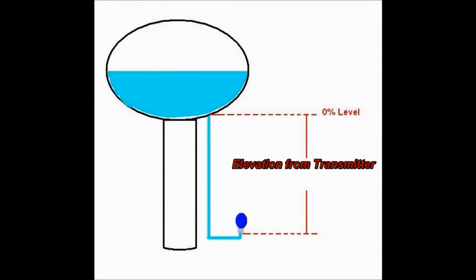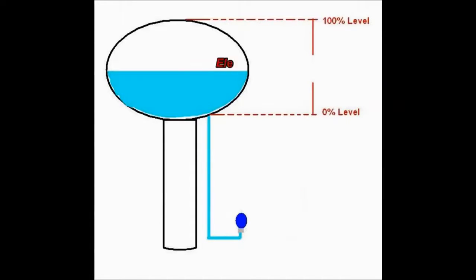Prior to configuring the transmitter, we must know the elevation distance from the transmitter to the zero percent level point. We must also know the elevation from the zero percent to the one hundred percent level point.